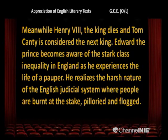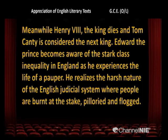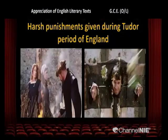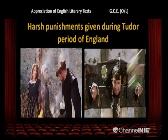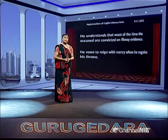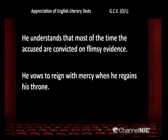In the picture you can see how Miles Hendon takes the real prince to his lodging and they have meals together. Meanwhile Henry VIII, the king, dies and Tom Canty is considered the next king. Edward the prince becomes aware of the stark class inequality in England as he experiences the life of a pauper. He realises the harsh nature of the English judicial system where people are burnt at the stake, pilloried and flogged. He understands that most of the time the accused are convicted on flimsy evidence, and he vows to reign with mercy when he regains his throne.